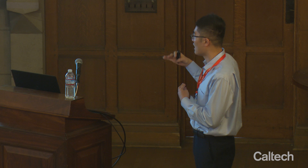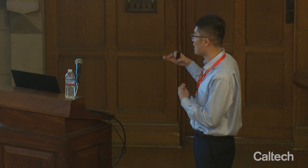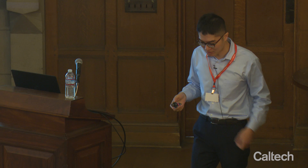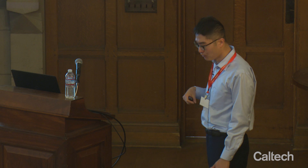I'll explain the full intuition for this a bit later, but for now let me briefly talk about the key features of prospect theory. Prospect theory has four important ingredients: reference dependence, loss aversion, diminishing sensitivity, and probability weighting.